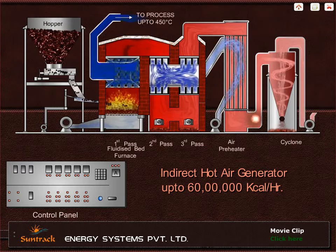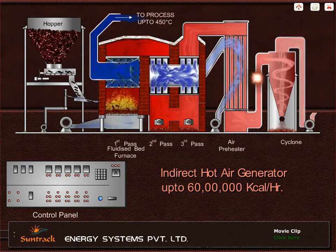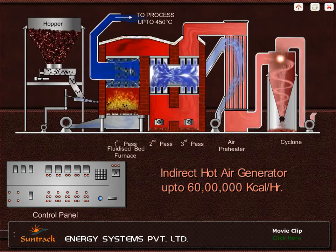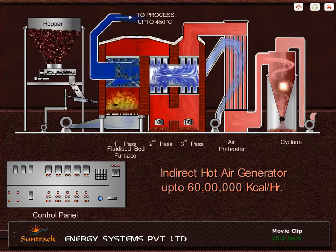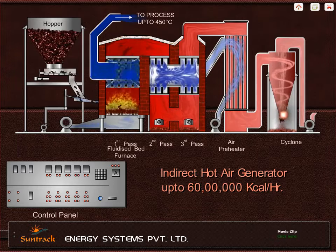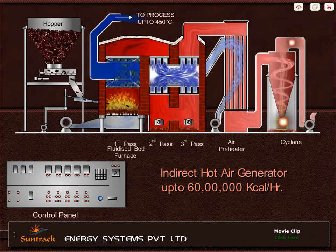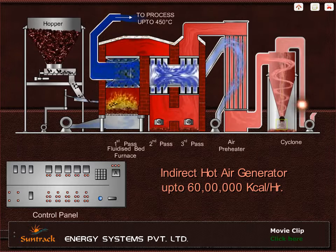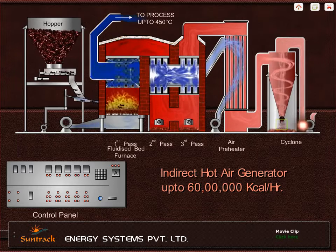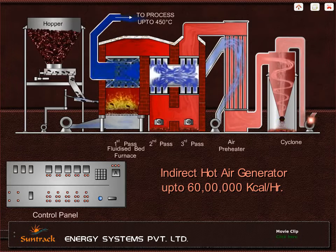Flue gases out of the air preheater are passed through a cyclone to remove ash particles, and then through the induced draught fan and to the chimney.